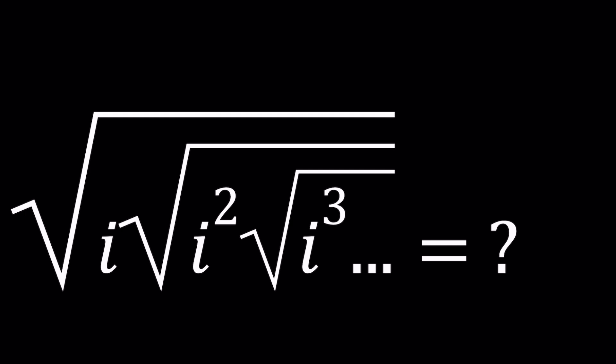We have the square root and lots of square roots, infinitely many. Those three dots, called ellipses, means this goes on forever without stopping. This is an infinite radical: the square root of i, multiply by the square root of i squared, multiply by the square root of i cubed, multiply by the square root of i to the fourth power, and so on.